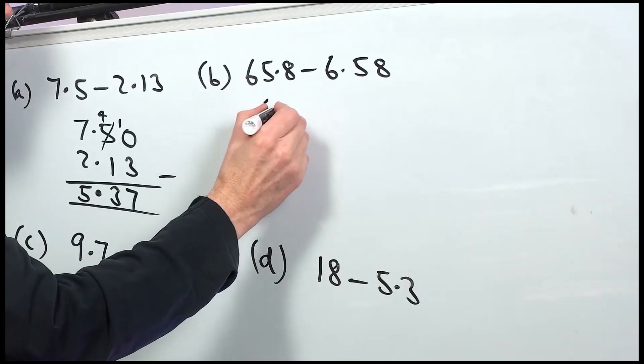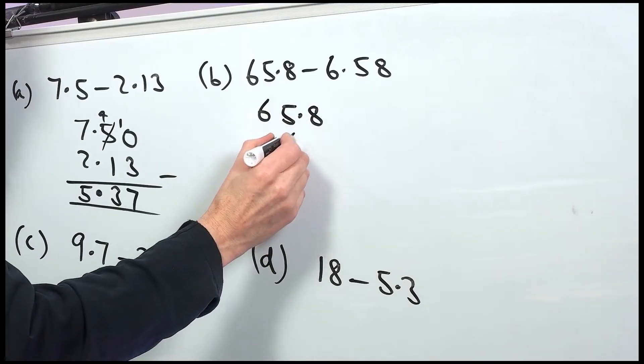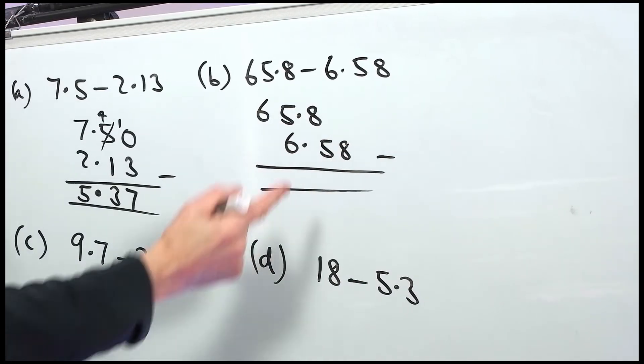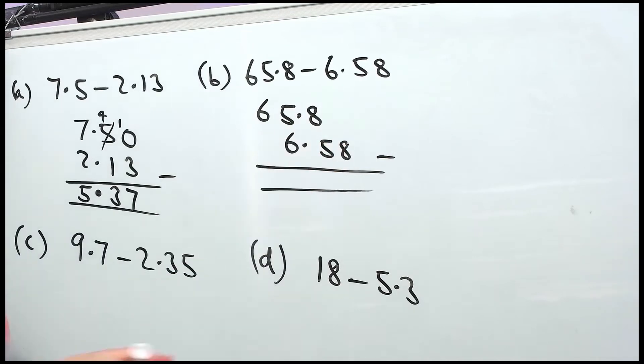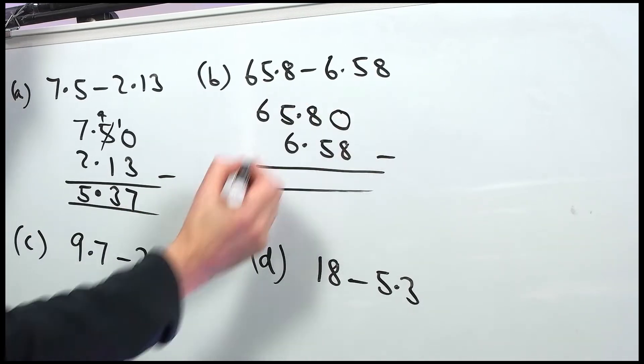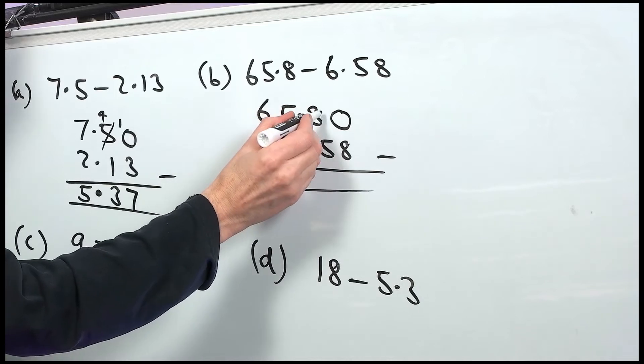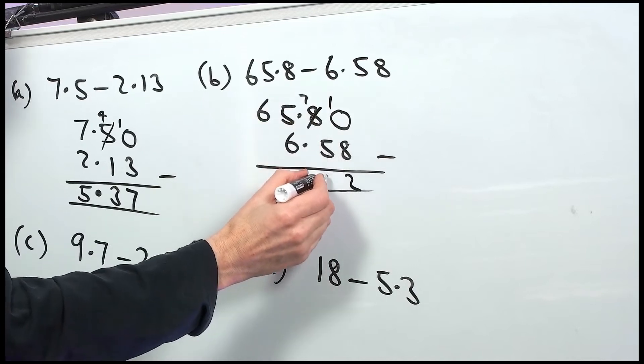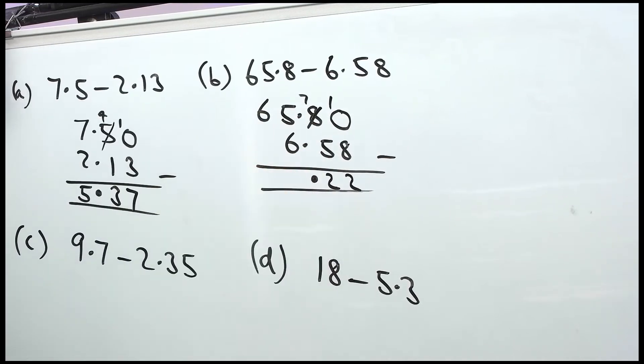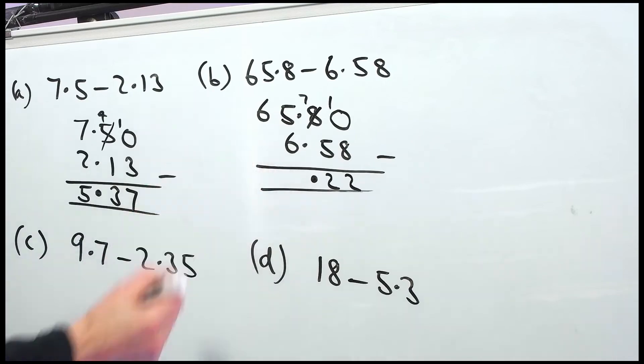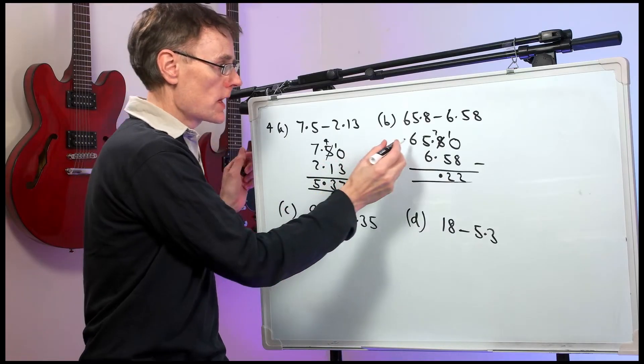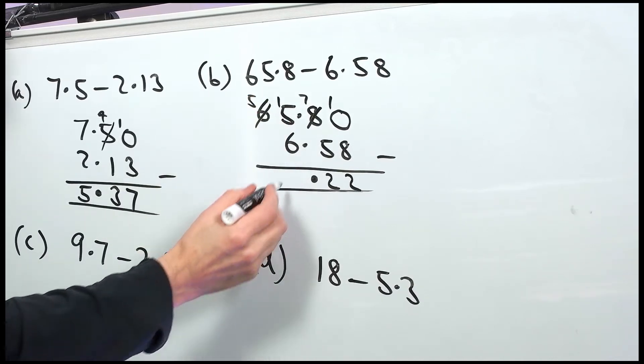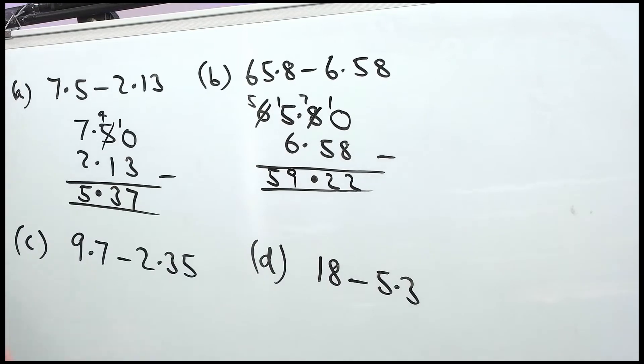Part B. 65.8 take away 6.58. So, we're subtracting. Nothing take away 8, you can't do. So, put down that nothing there. Zero. Now, we steal one from the 8 to leave 7. 10 take away 8 is 2. 7 take away 5 is 2. The decimal point must line up. Now, 5 take away 6, you can't do. So, you go next door and you steal one from the 6 to leave 5. 15 take away 6 is 9. 59.22.